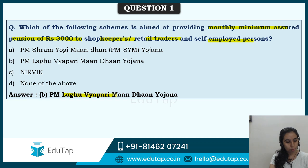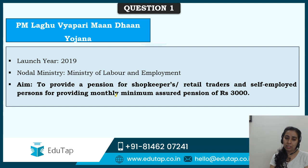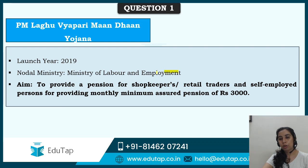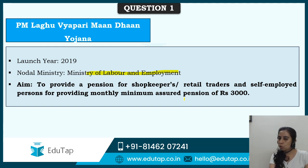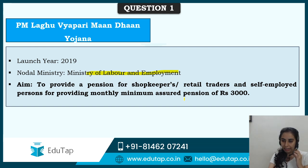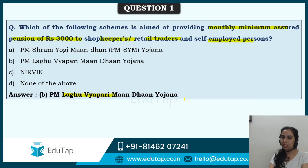A pension of Rs. 3000 is going to be provided. Agam has also given the correct answer. Laghu Vyapari Mandhan Yojana was launched in the year 2019. The nodal ministry of the scheme is the Ministry of Labour and Employment. The aim is to provide a pension of Rs. 3000 to self-employed retail traders or shopkeepers — basically the unorganized sector is to be covered here. From the name itself, you can make it out: minimum pension to shopkeepers and retail traders.